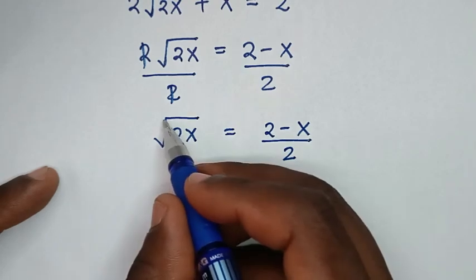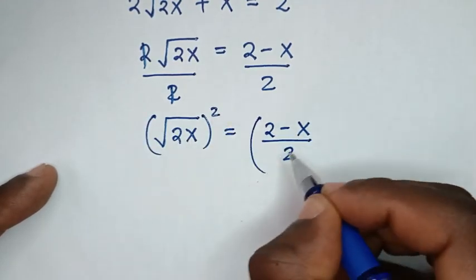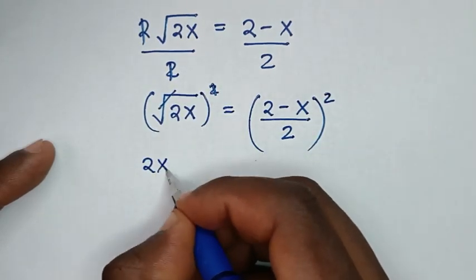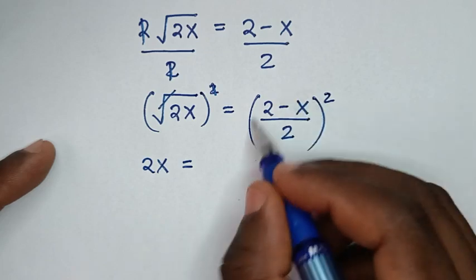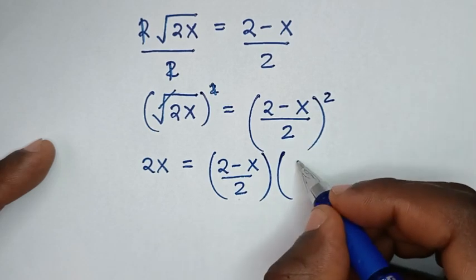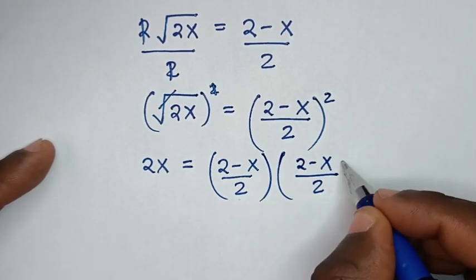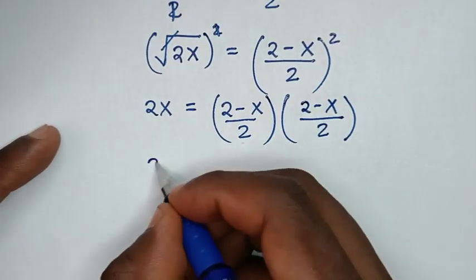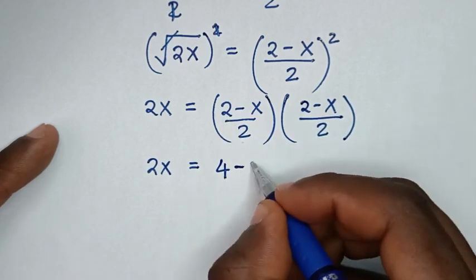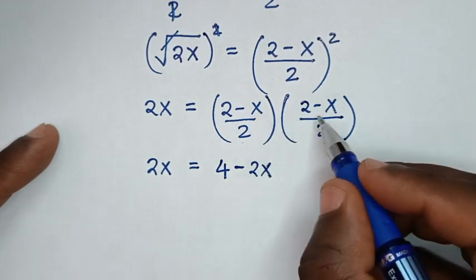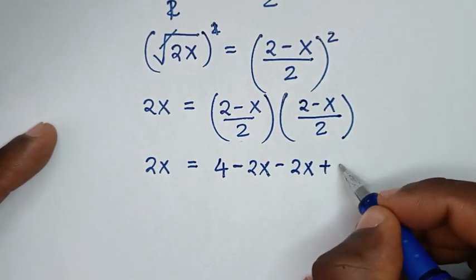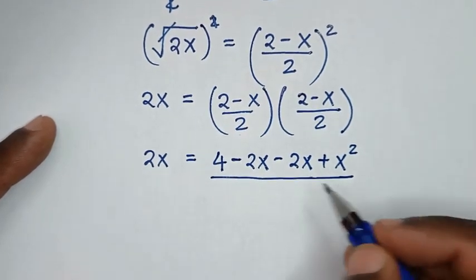To remove the square root we square both sides, so the square root cancels the square. It becomes 2x = [(2 - x)/2] × [(2 - x)/2]. Expanding: 2 times 2 is 4, 2 times negative x is -2x, negative x times 2 is -2x, negative x times negative x is positive x².